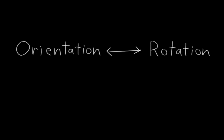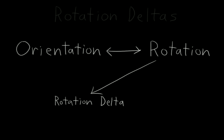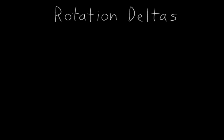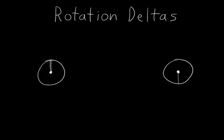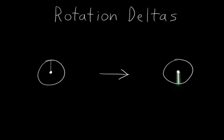The first is what I will call a rotation delta. With rotation deltas, the only aspects of the rotation that we care about is the difference it creates between two orientations. Or, in other words, all we care about is that this orientation changes into this orientation.